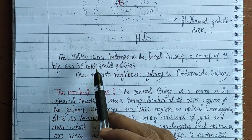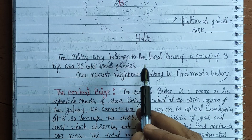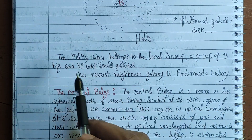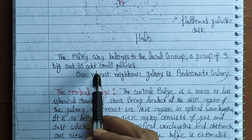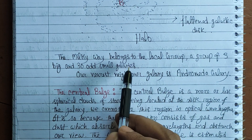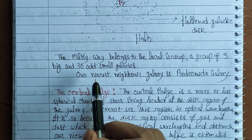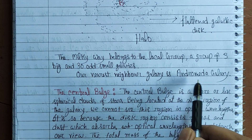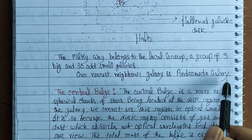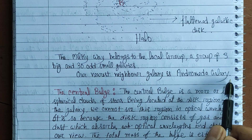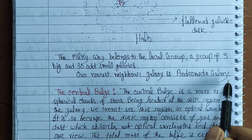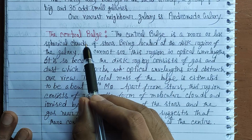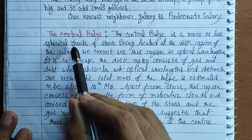The Milky Way belongs to the local group, a group of three big and about 30 smaller galaxies. Our nearest neighbor galaxy is the Andromeda galaxy, which is also a massive galaxy like the Milky Way.